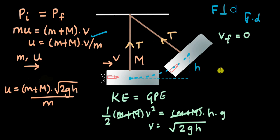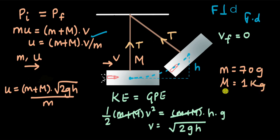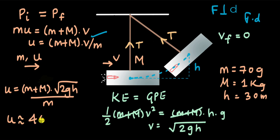Let's put in some numbers. A typical bullet mass is 70 grams, the block mass is 1 kilogram, and the height reached is 30 centimeters. Substituting these values, u comes out to be approximately 458 meters per second. That is how one can measure the speed of a bullet using nothing but a block and a piece of string.